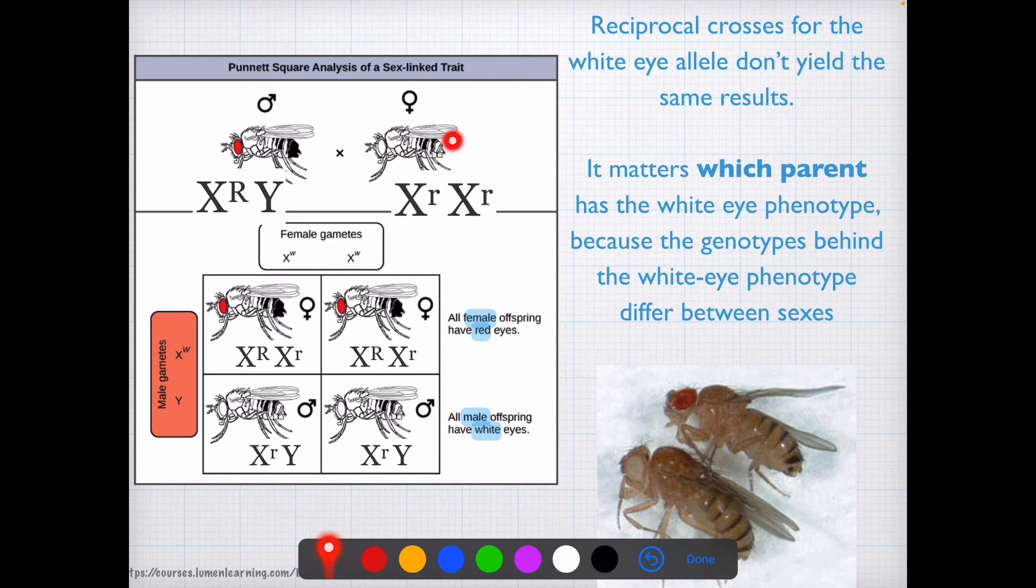So they have one set of genes on the X, and then they have the Y, where they're missing a lot of the genes. And you compare that to females, where they have two full X chromosomes, females have two chances to get it right, so to speak, two chances to have a dominant allele. Whereas males only have one chance to get that dominant allele, because they only have one X chromosome.